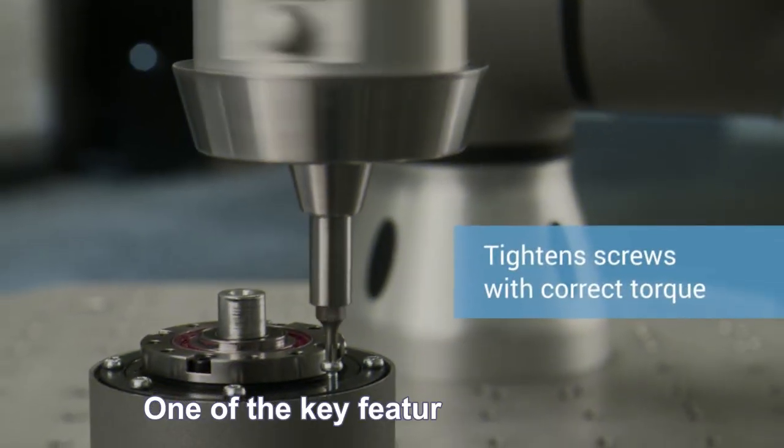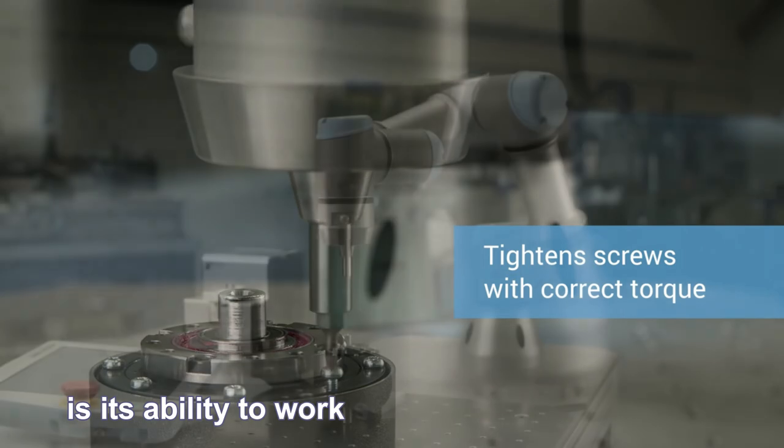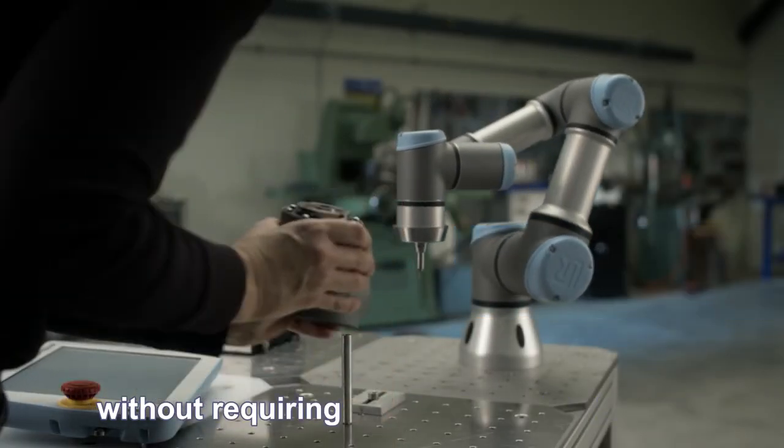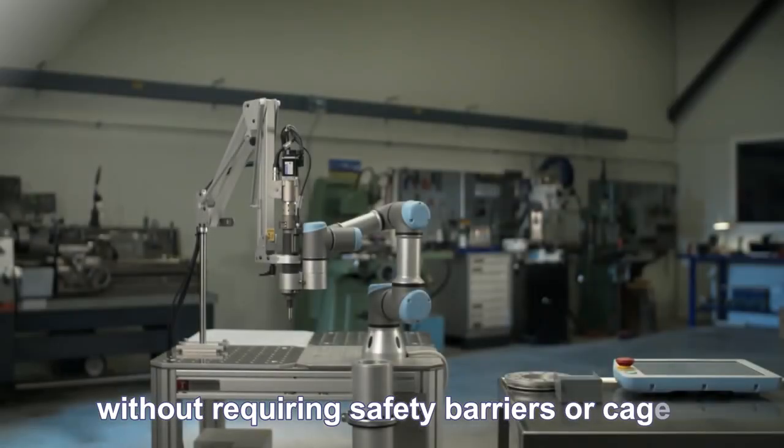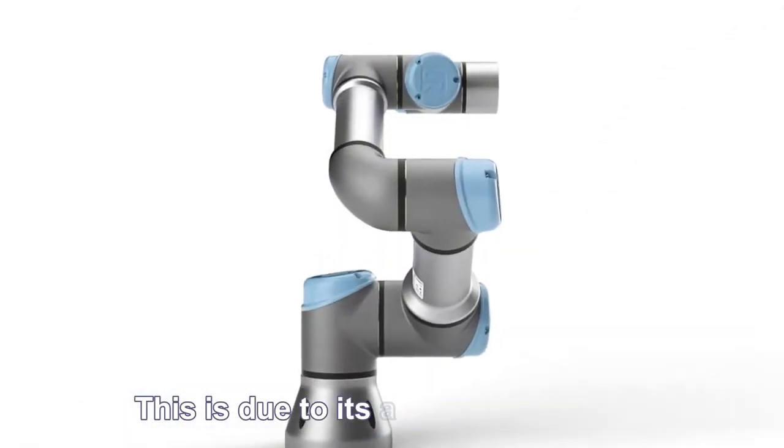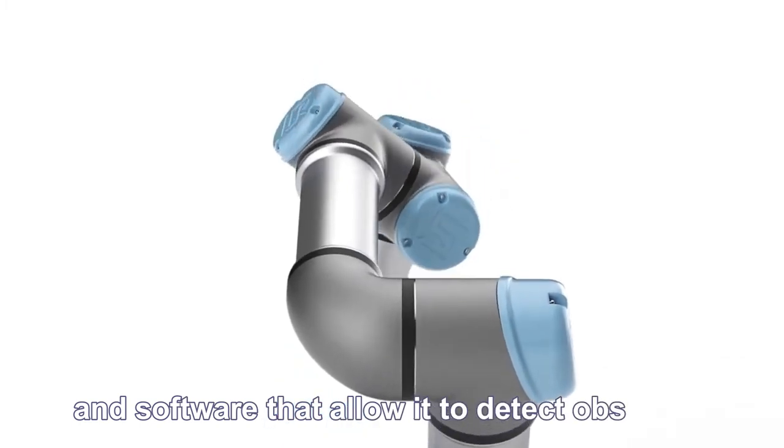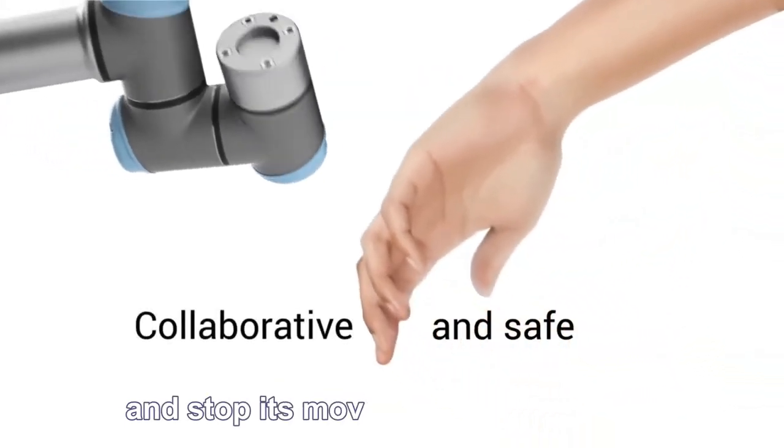One of the key features of the UR3 is its ability to work safely alongside humans without requiring safety barriers or cages. This is due to its advanced sensors and software that allow it to detect obstacles and stop its movements if necessary.